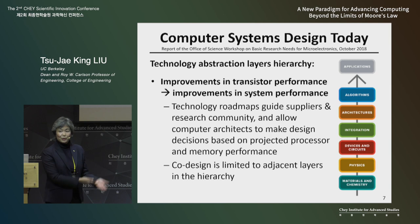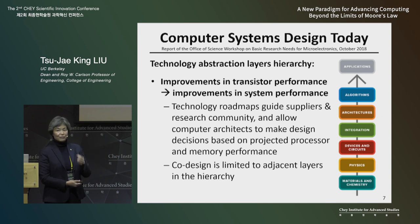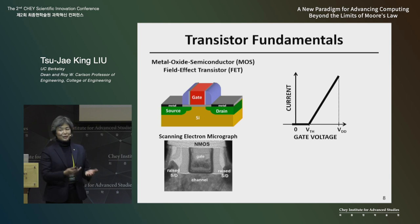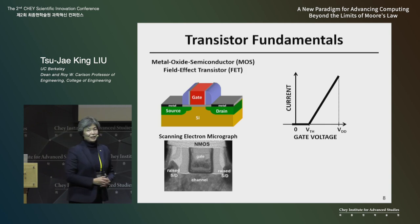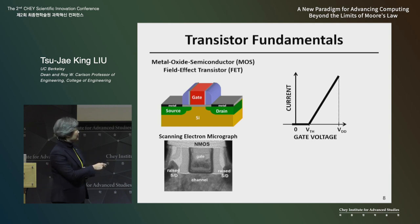To understand the fundamental limits of Moore's Law, I need to review some basic information about how a transistor functions. This is a cartoon of a transistor — it's a three-terminal device. The current flowing between two terminals, the source and the drain, inside the semiconductor material, is controlled by the voltage applied to the gate electrode.